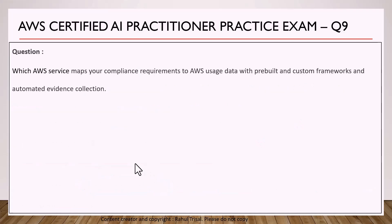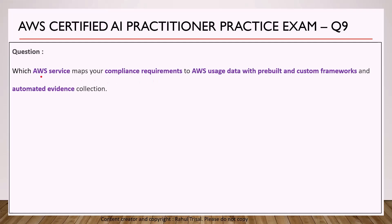Now let's go to the next question: which AWS service maps compliance requirements to AWS usage data with pre-built and custom frameworks and automated evidence collection? The keywords are compliance requirements, AWS usage data, pre-built and custom frameworks, and automated evidence collection. You should think about all compliance-related services available within AWS.